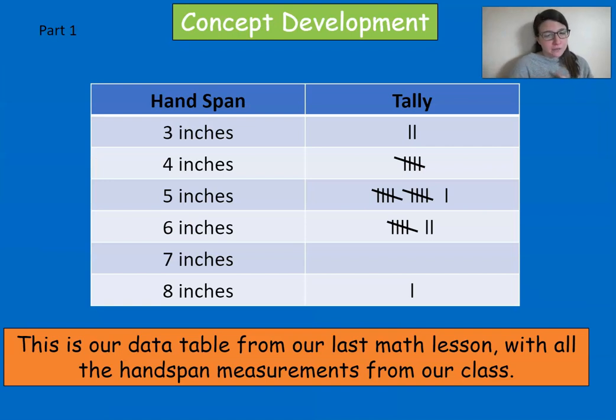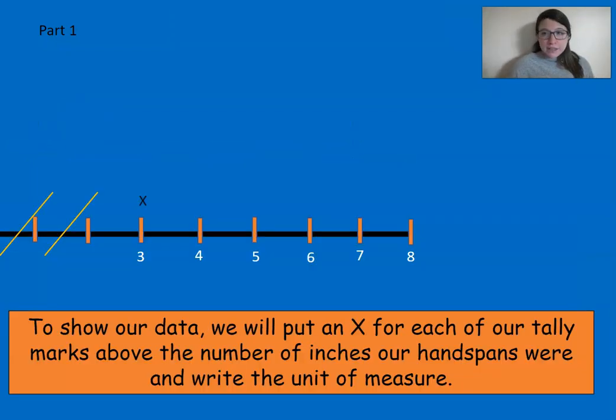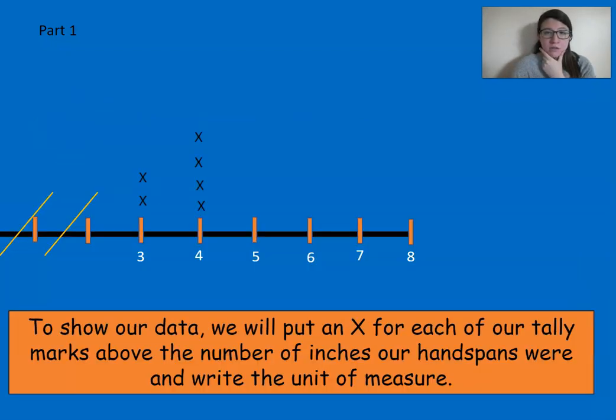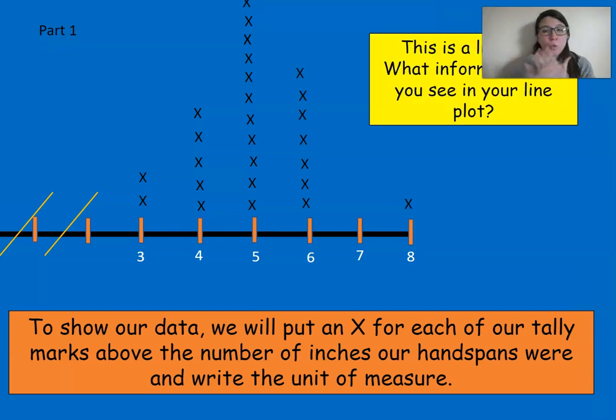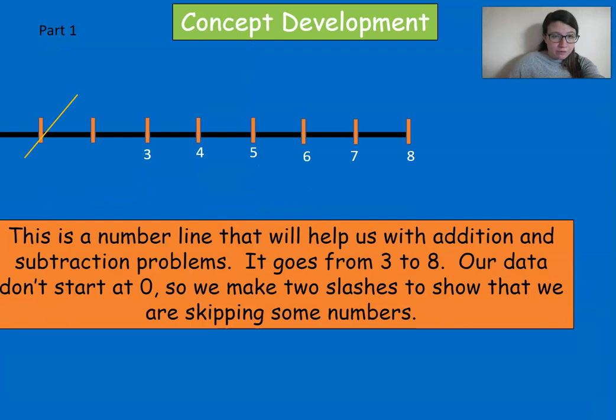All right. So this is a tally chart that I took from my house of the hand span measurements. Pretty cool, right? Okay. So what we can do with this data, instead of having it in a table, we can put it in what we call a line plot. Cool. This looks like a number line. In our data, if we go back, it goes from three inches to eight inches. So I'm going to cross off the first couple numbers and just go from three to eight since we don't have any numbers that start at zero, one, or two. So we're literally just taking our number line and taking how many people have three inches. So two people have three inches. And then I'm just graphing, putting X's for the amount of people. Each X represents one tally mark.